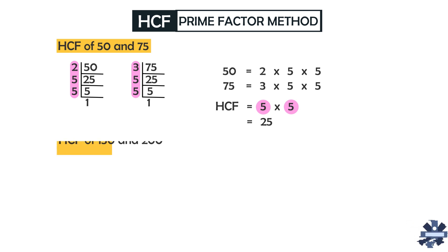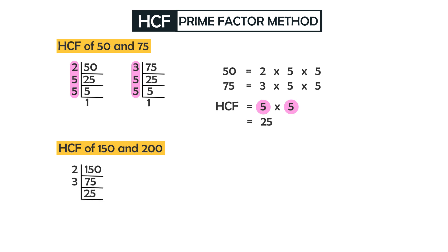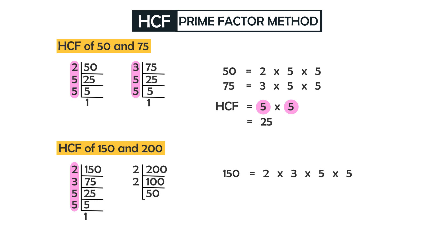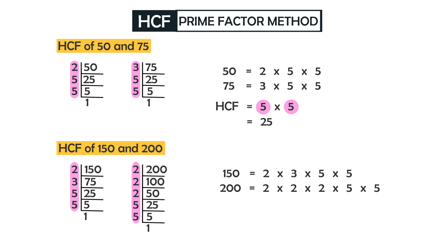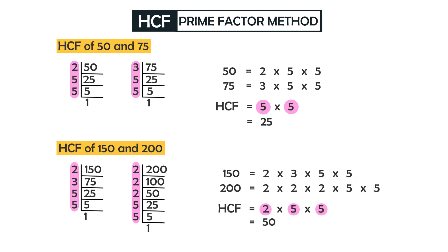Now let's find the HCF of 150 and 200. 150 = 2 × 3 × 5 × 5, and 200 = 2 × 2 × 2 × 5 × 5. The common prime factors are a pair of 2, a pair of 5, and another pair of 5. So 2 × 5 × 5 = 50. The highest common factor of 150 and 200 is 50.